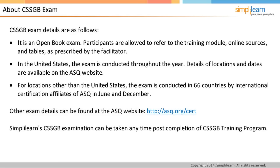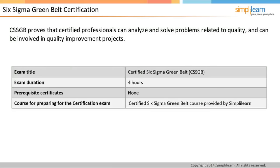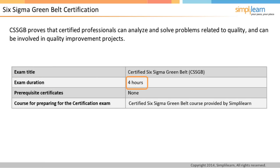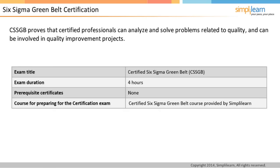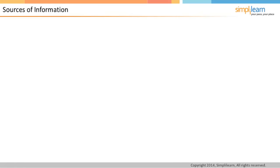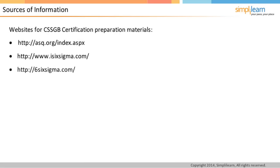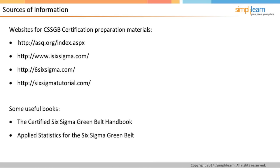CSSGB proves that certified professionals can analyze and solve problems related to quality and can be involved in quality improvement projects. The exam title is Certified Six Sigma Greenbelt, or CSSGB. The exam duration is four hours, and there are no prerequisite certificates required to take up this exam. The certified Six Sigma Greenbelt course provided by Simply Learn can be taken up to prepare for the certification exam. Some websites providing CSSGB certification preparation materials and reference books are listed on the screen.